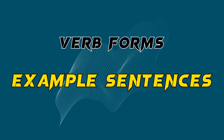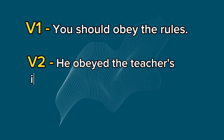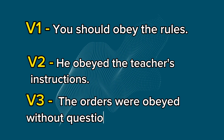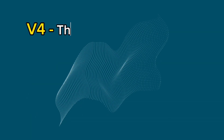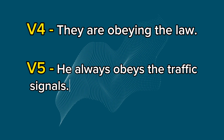Example sentences. V1: You should Obey the rules. V2: He Obeyed the teacher's instructions. V3: The orders were Obeyed without question. V4: They are Obeying the law. V5: He always Obeys the traffic signals.